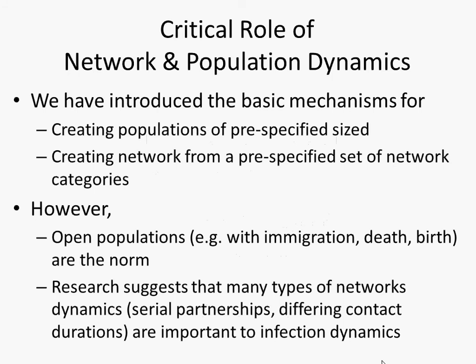At this point we've introduced basic mechanisms for creating populations of pre-specified size, done in exercises at home and in class. We've created networks from pre-specified categories — scale-free, distance-based, ring lattice, small world, Poisson random. However, we've done this for pre-specified sizes and fixed networks. In the world more broadly, we're often interested in open populations where there are processes that change the number of people — deaths, births, immigration, emigration, and so on.